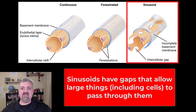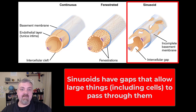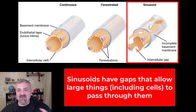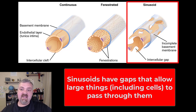The third kind is called a sinusoid. These literally have gaps and spaces in them, so they're going to move large things — things that could never fit through a continuous or fenestrated capillary. This would be kind of porous, like Swiss cheese. Some cells can fit through these, as can large plasma proteins — these kinds of things are going to fit through these special sinusoids.